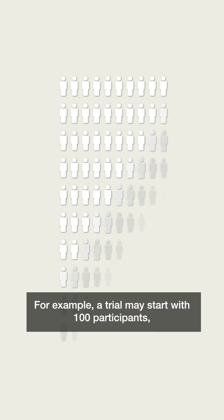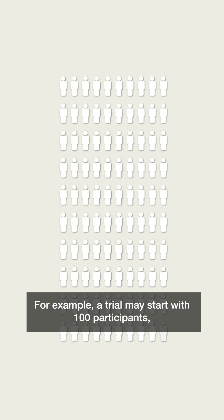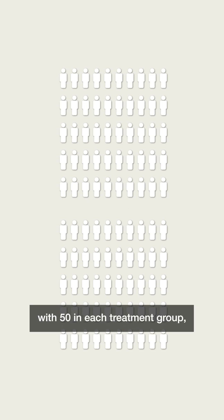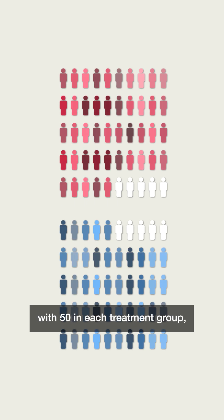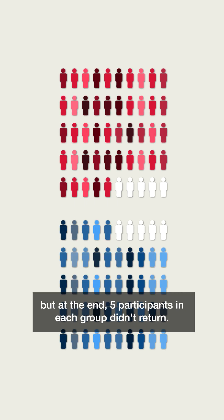For example, a trial may start with 100 participants with 50 in each treatment group, but at the end, five participants in each group didn't return.